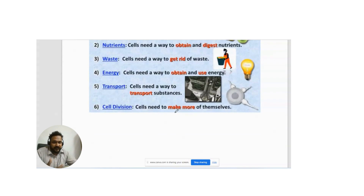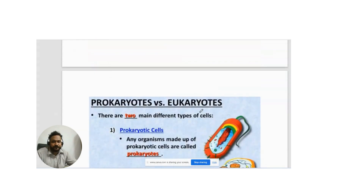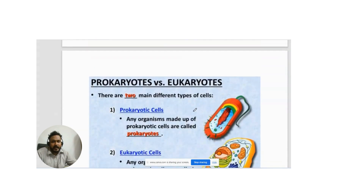Cells need to make more of themselves through division. When a cell divides it makes more cells, causing the growth of an organism. Human beings are multicellular organisms. There are two types of organisms: unicellular and multicellular. Human beings come under multicellular organisms.